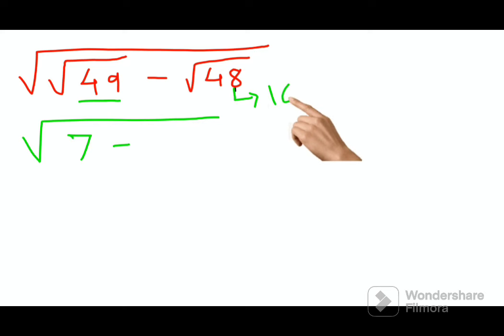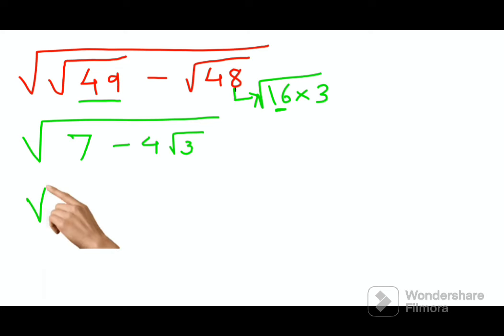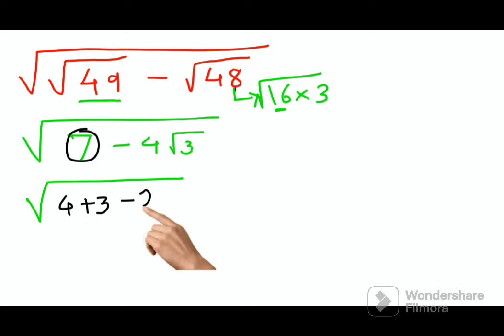This becomes 16 into 3, so when you put it under a root you can take the 16 outside, so you get 4 root 3. Now if you look closely, I can write 7, this particular 7 can now be written as 4 plus 3, and this I will further factorize as nothing but 2 into 2 root 3.